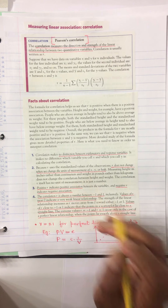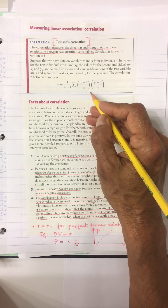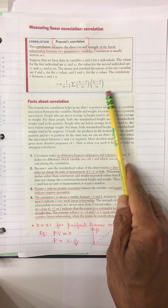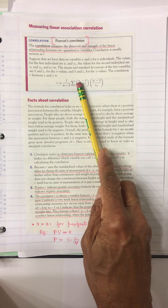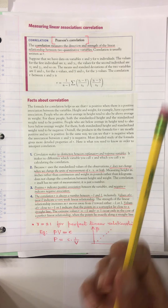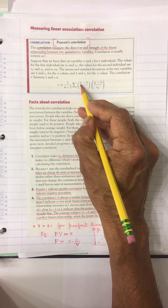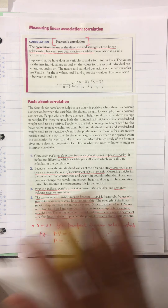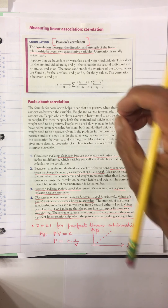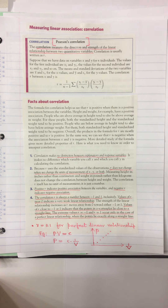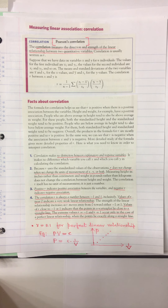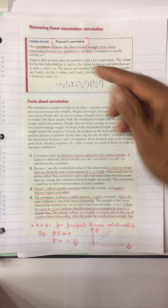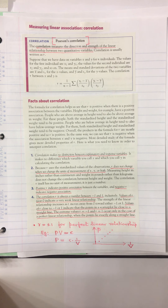Because r uses standardized values, it does not change when you change the units of measurement. For example, if x is height and y is weight, it doesn't matter whether height is in inches or centimeters, or whether weight is in pounds or kilograms. The units have nothing to do with the r value.